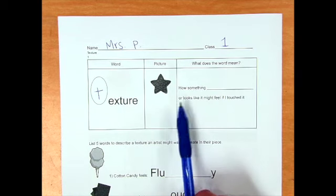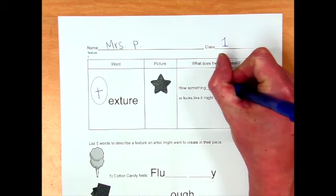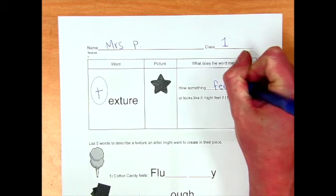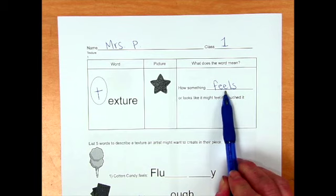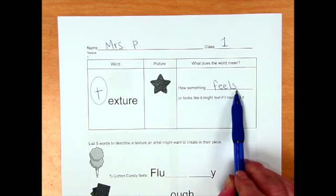The word texture means how something feels. So we're going to write feels: F, E, E, L, S.